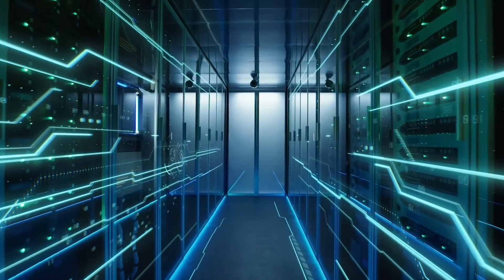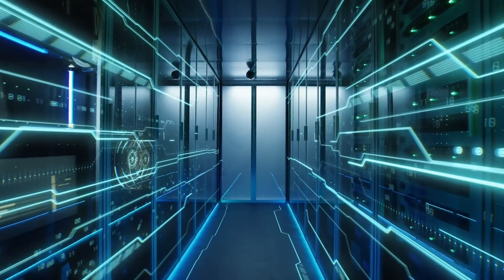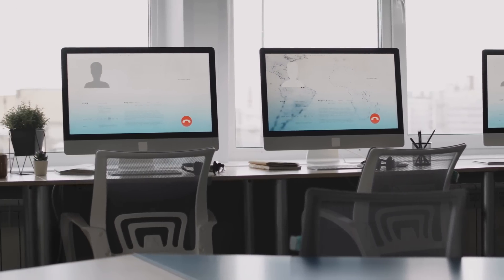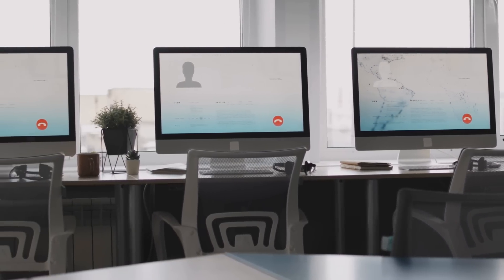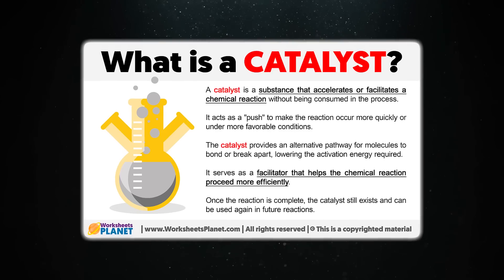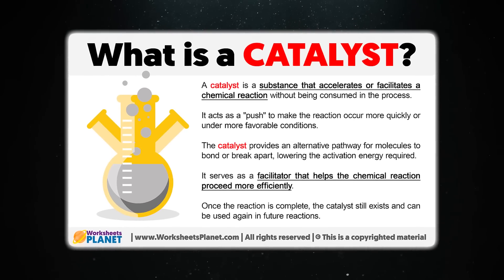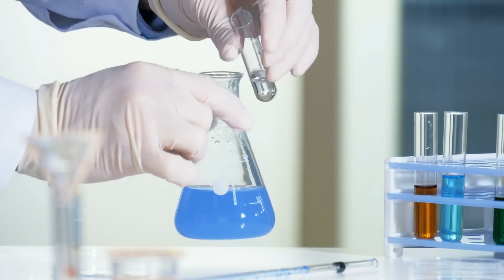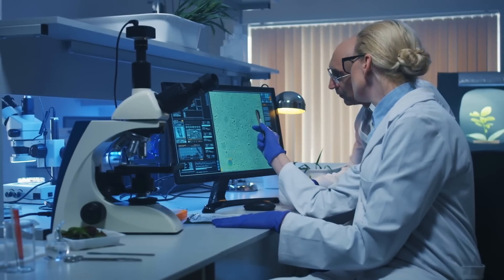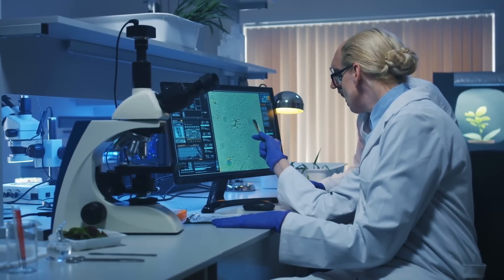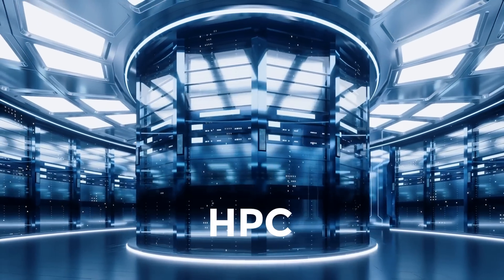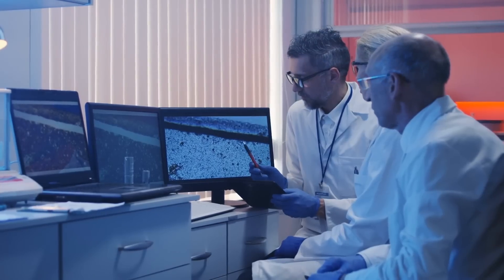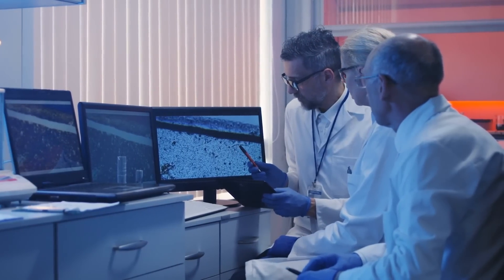With advancements like these, quantum computers are becoming more capable and reliable, moving us closer to a future where we can solve problems that today's computers can't. The process started with identifying the active space of a catalyst, which is the part of a catalyst responsible for its chemical reactions. To do this, scientists used high-performance computing simulations. HPC allows computers to process large amounts of data very quickly, which helps scientists understand complex systems, like catalysts.